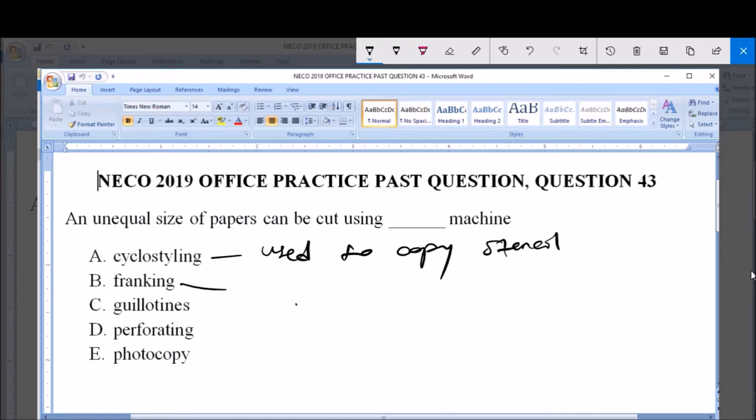So in other words, Franking machine is used to print on envelope the design of a postage stamp.